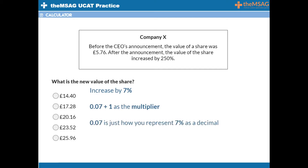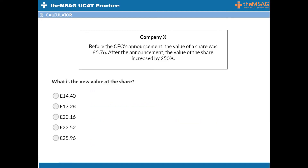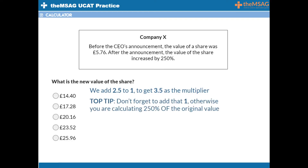Likewise, to increase by 20%, we add 0.20 to 1, giving us 1.20 as the multiplier. To increase by 250%, note that 250% as a decimal is 2.5. We add 2.5 to 1 to get 3.5 as the multiplier. Don't forget to add the 1, otherwise you're calculating 250% of the original value, not the new figure after the increase. £5.76 multiplied by 3.5 gives us £20.16 as the correct answer.